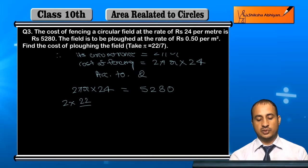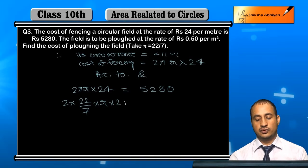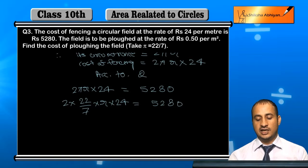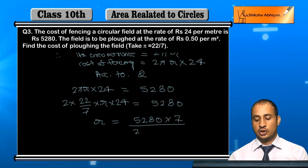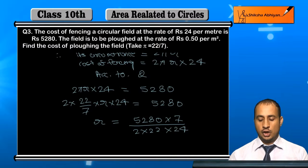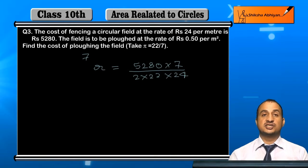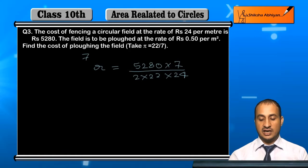So we have 2 × (22/7) × 24 = 5,280. From here, find the value of r. The value of r will be 5,280 × 7 divided by (2 × 22 × 24). When you solve this, r comes out to be 35.